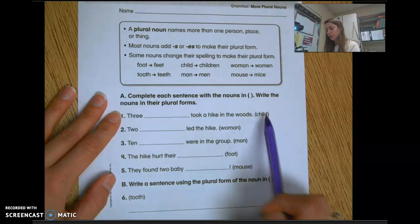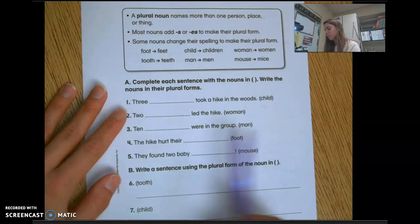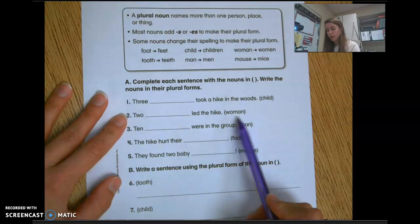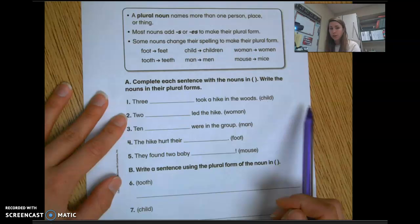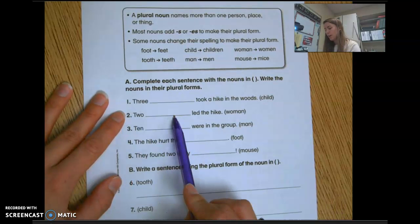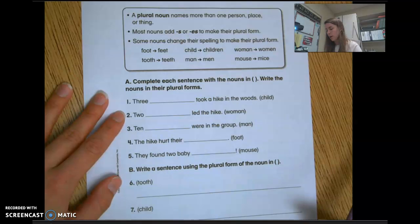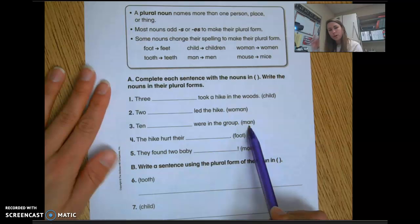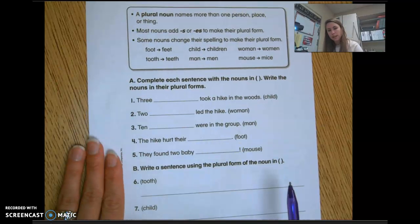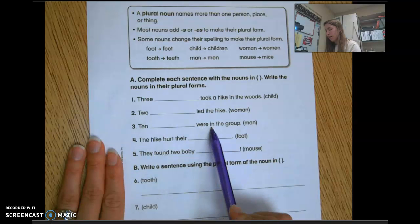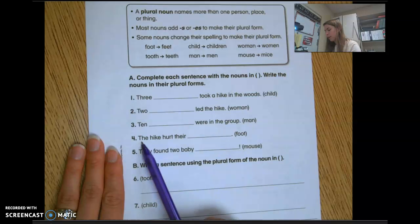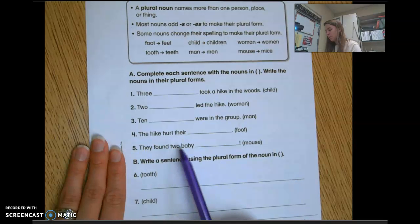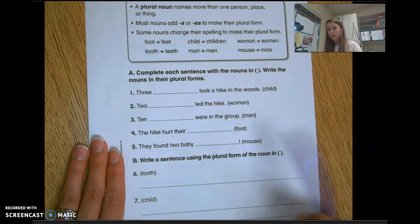So I look at this word over here in parentheses and I change it on the line to a plural. 'Two woman led the hike' - it doesn't make sense if I use the singular form woman as written here. I'm not going to write this exact word in the blank; I'm going to change it to a plural and write it in the blank: 'Two women led the hike.' I need the plural. So look at three, four, and five. I'm going to read you the sentence by just saying blank, and you're going to look at this word in parentheses and change it to the plural form on the line. 'Ten blank were in the group.' Number four: 'The hike hurt their blank.' Number five: 'They found two baby blank.' So make sure you change this word in parentheses to a plural.